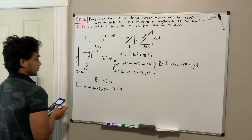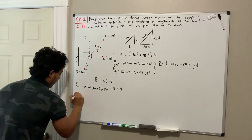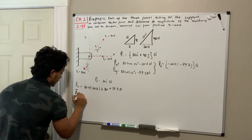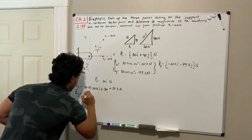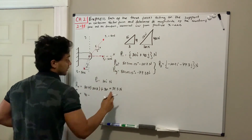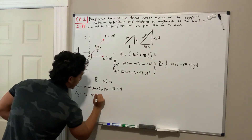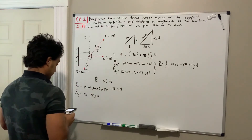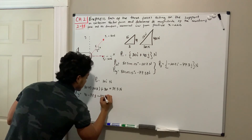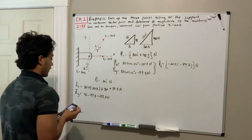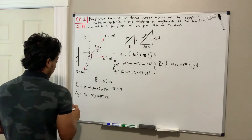Now for the resultant in the y direction, Ry equals F1y plus F2y, which is positive 40 plus negative 77.3, giving us negative 37.3 Newtons.